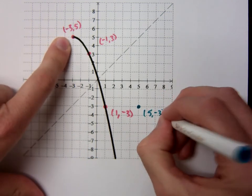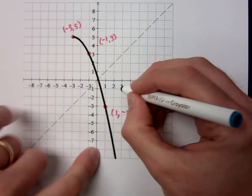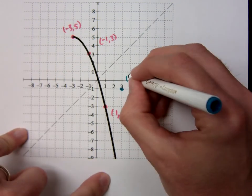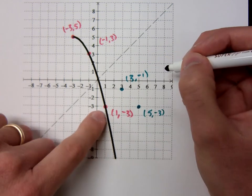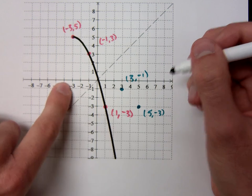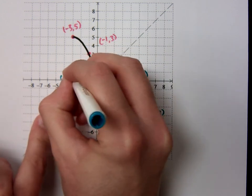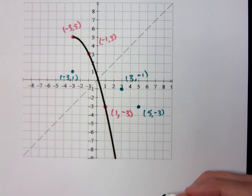5, negative 3. I've got negative 1, 3. So, I should have what? 3, negative 1. Let's go right here at 3, negative 1. And I've got 1, negative 3. So, negative 3, positive 1.